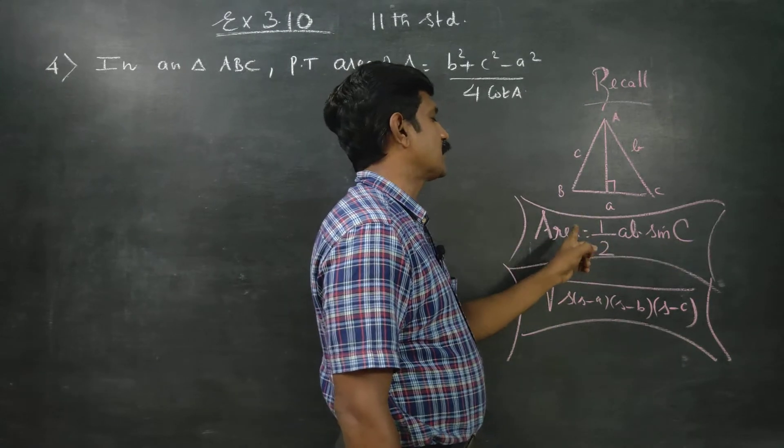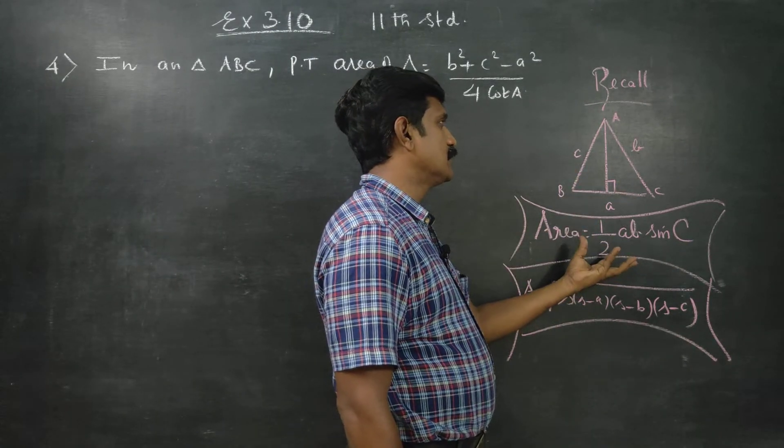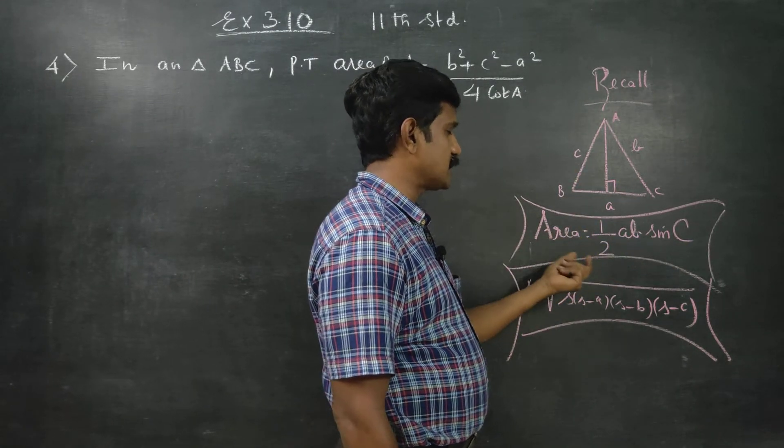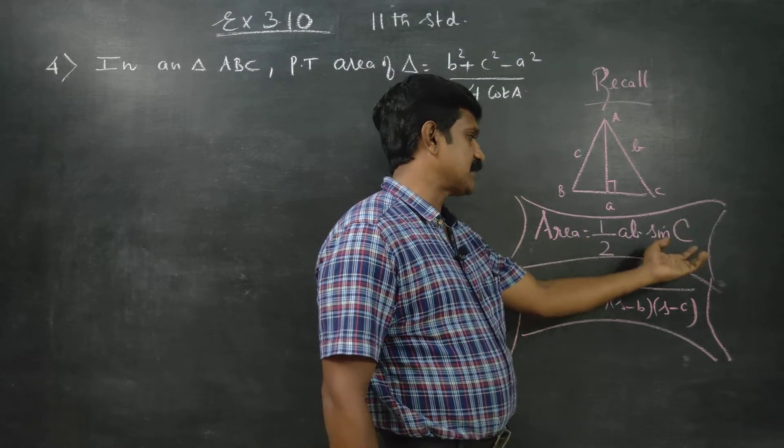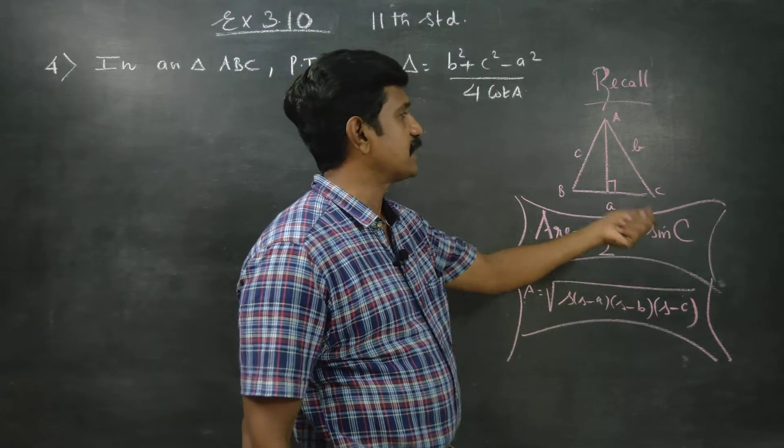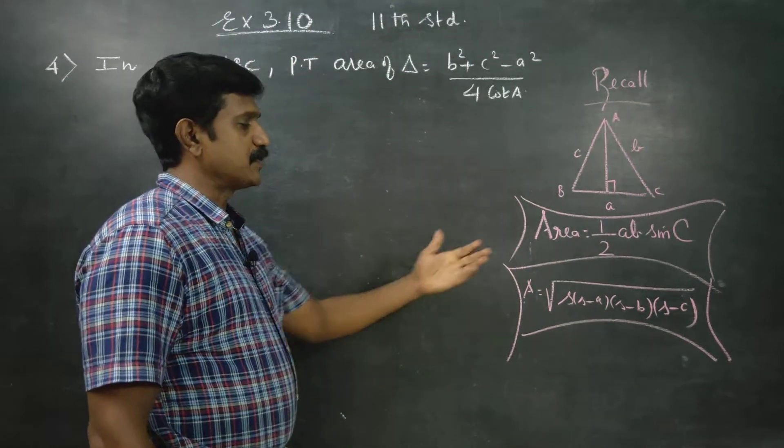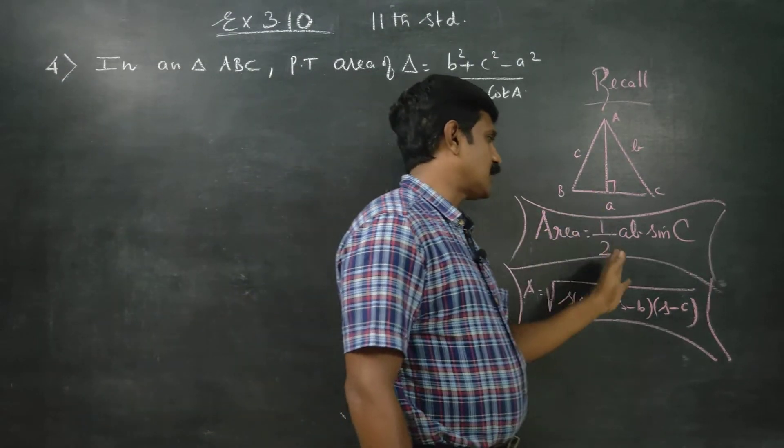If angles are used, we get a formula for area of the triangle. You can refer in the book, area is equal to half ab sin c, with proof. This is a property of triangles: area is equal to half ab sin c.